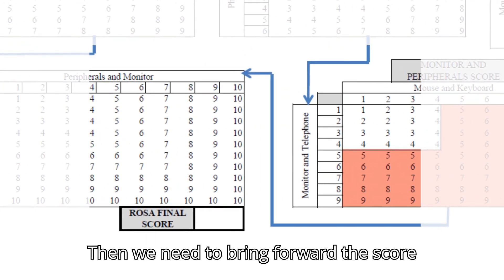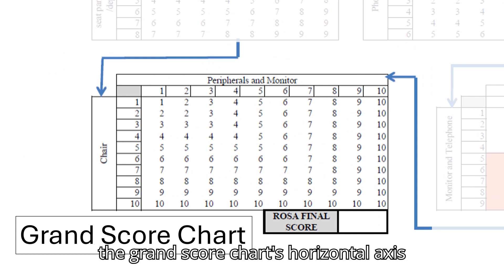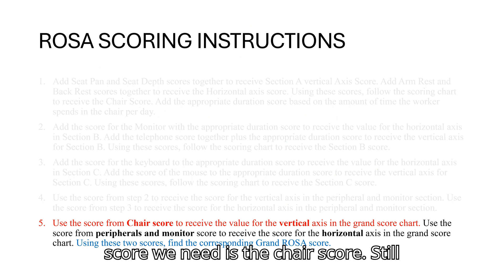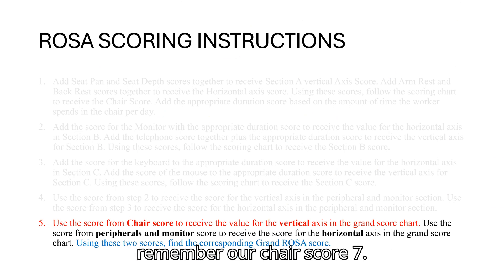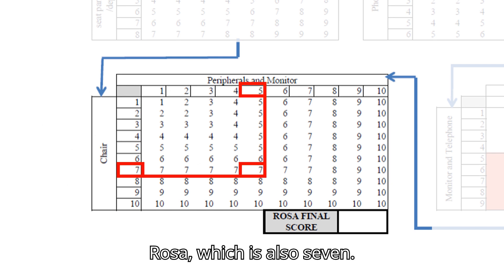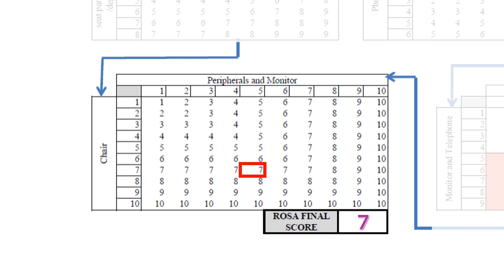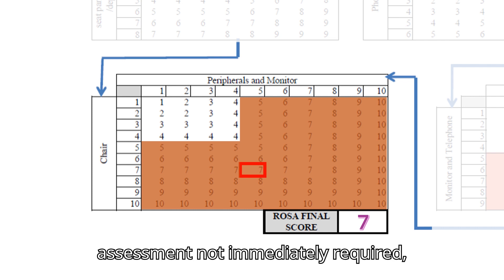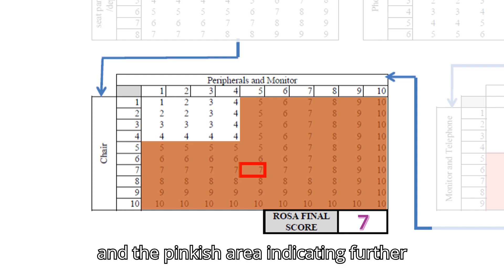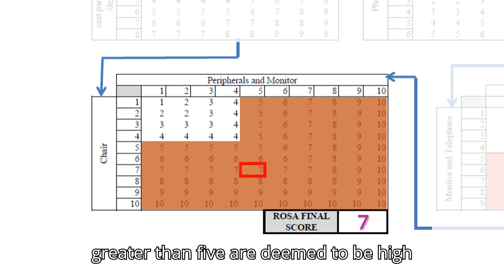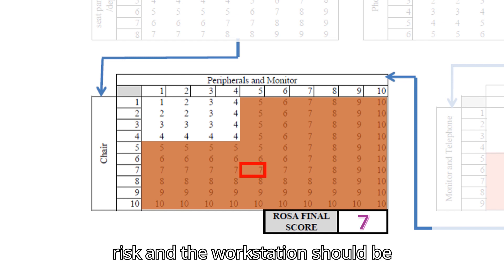We bring forward the peripheral and monitor score of 5 to the grand score chart's horizontal axis. The chair score of 7 is used on the vertical axis. From the grand score chart, the final ROSA score is 7. The final ROSA score is divided into two areas: white indicating further assessment is not immediately required, and the pinkish area indicating further assessment is required as soon as possible. Scores greater than 5 are deemed high risk and the workstation should be assessed further.